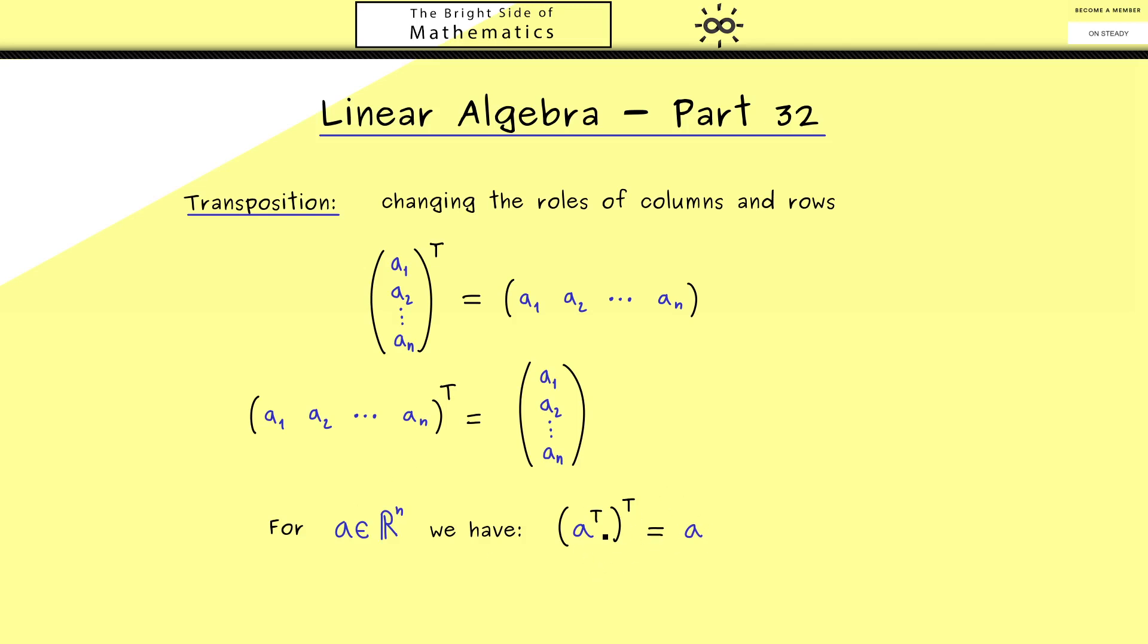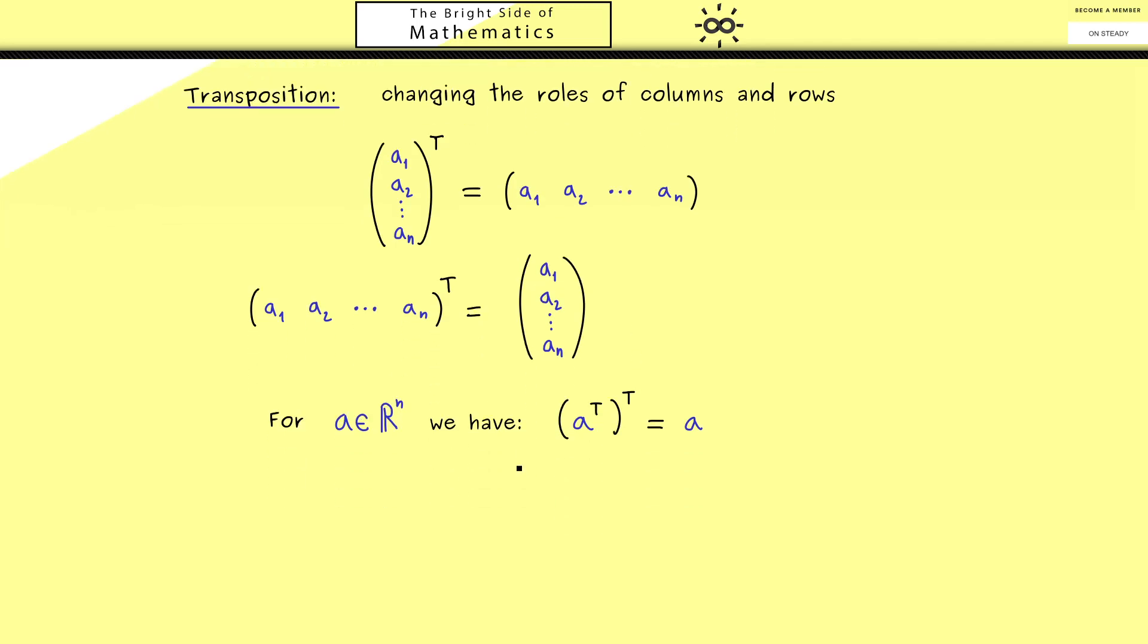Okay, then in the next step let's write down the definition for matrices. We know a matrix is just a table of numbers with rows and columns, and now the transposition should change the roles of the columns and the rows. Therefore, let's fix the matrix A with m rows and n columns, so we have m times n. Then we are able to define a new matrix A^T, which now should be an element of R^(n×m). So you see, we already exchanged rows and columns. The common name for A^T is just transpose of A.